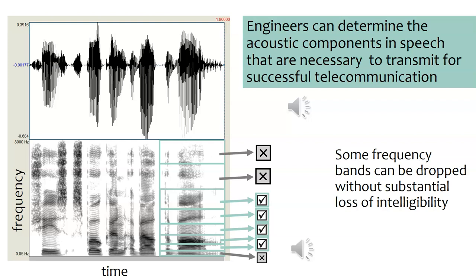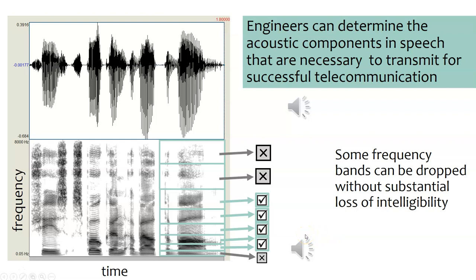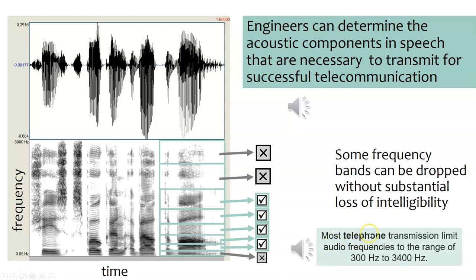On the class website you can listen to these sound examples. The sentence is: 'The juice of lemons makes fine punch.' Then we play a version where we've dropped out the lowest and some of the highest frequency bands, leaving only those in the middle: 'The juice of lemons makes fine punch.' What we just played is a band-pass filtered version of the speech, giving us only frequencies between 300 and 3,400 hertz — which is the range actually transmitted by most telephones.